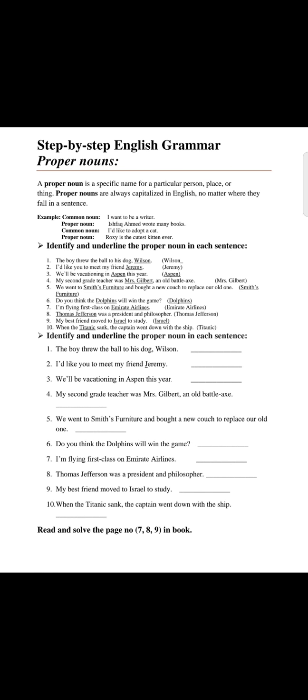The next one is your book step by step English grammar. The first portion is proper noun. Now what are proper nouns? A noun is a name of place, person or thing. Proper noun means a specific name for a particular person, place or thing. Proper nouns always start with a capital letter. For example, common noun: I want to be a writer. Proper noun: Ishfaq Ahmad wrote many books. Ishfaq Ahmad is a proper name.